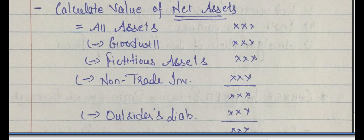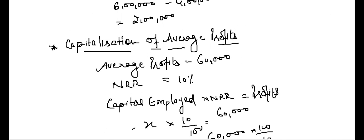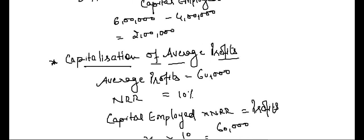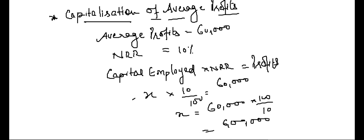I have already discussed in the super profit method how we calculate capital employed. This is how you calculate the actual capital employed in the business. This is the capitalization of average profit method. We have two methods: capitalization of average profits and capitalization of super profits.